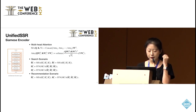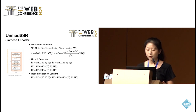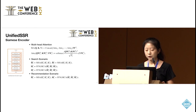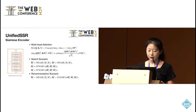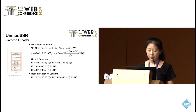The sequence matrix then goes through the Siamese encoder, which is transformer decoder-like. Each encoder layer contains a multi-head self-attention, a multi-head cross-attention, and a feed-forward sub-layer. For the cross-attention, the query comes from the current sequence and the key and value come from the sequence in the other branch. To maintain the Siamese structure for the recommendation scenario where only one branch is active, the cross-attention becomes the same as self-attention.